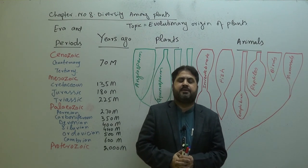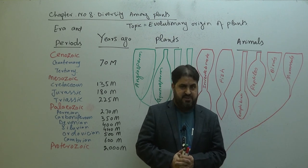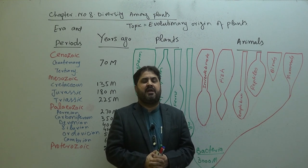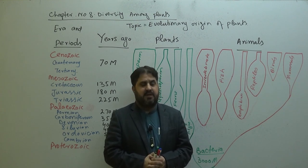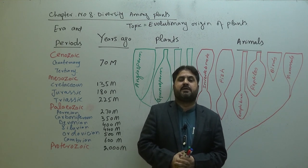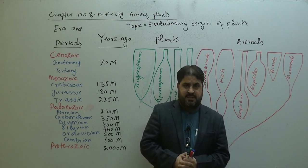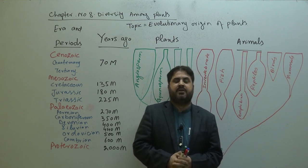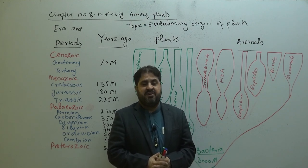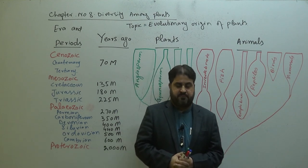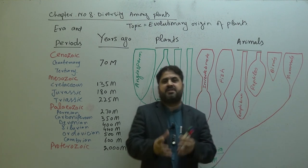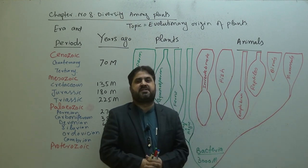In plants, phragmoplast formation occurs during the time of cell division — there is no proper invagination of the cell membrane to divide the cytoplasm. That's why the Golgi body is involved to develop a cell wall between the division phases of a cell. This is called phragmoplast formation. These are the general characteristics of plants.